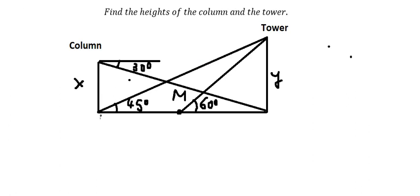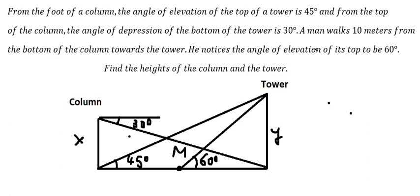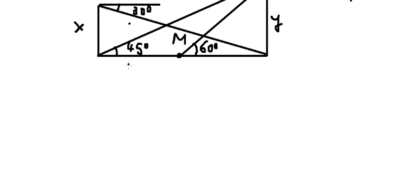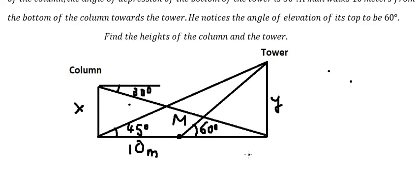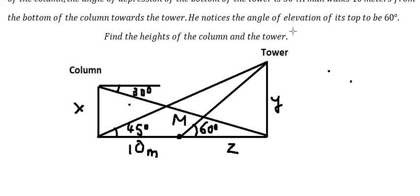We know that the distance here is 10 meters. I will show you how to answer this. First, I will let the distance from the man to the tower be Z — I need to highlight that in red color here.